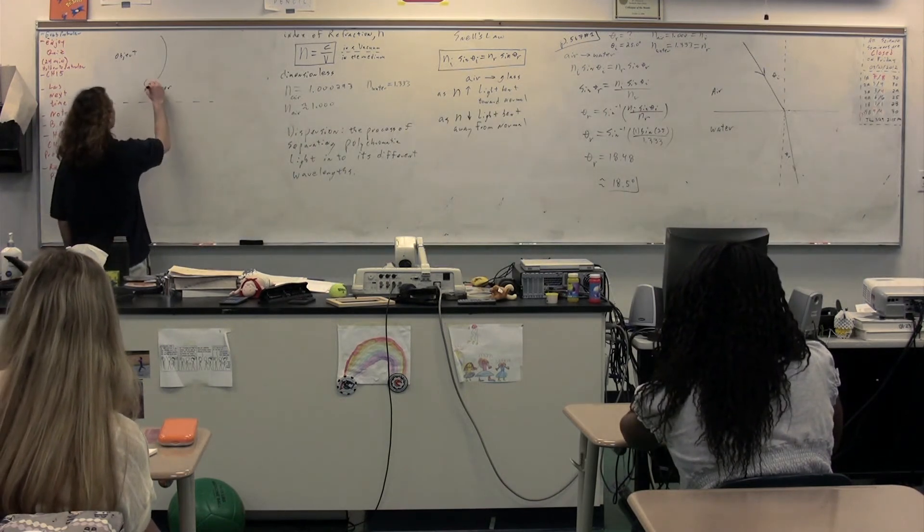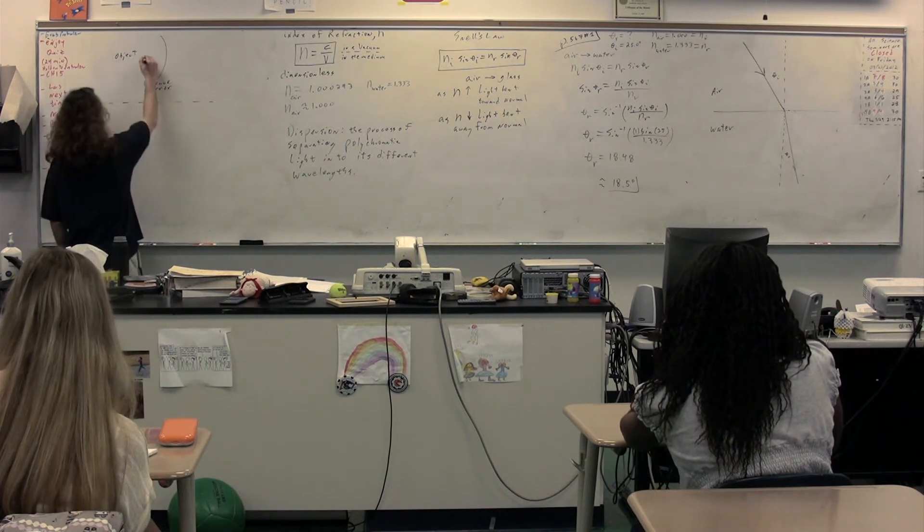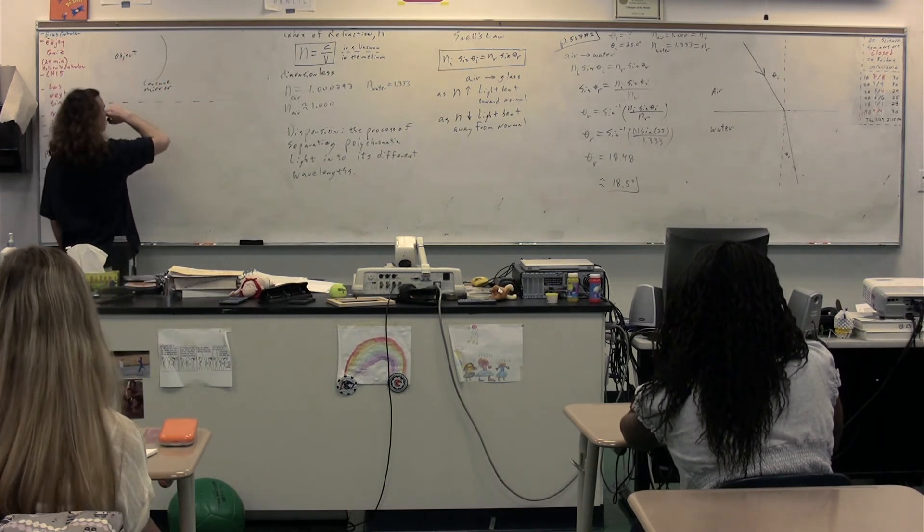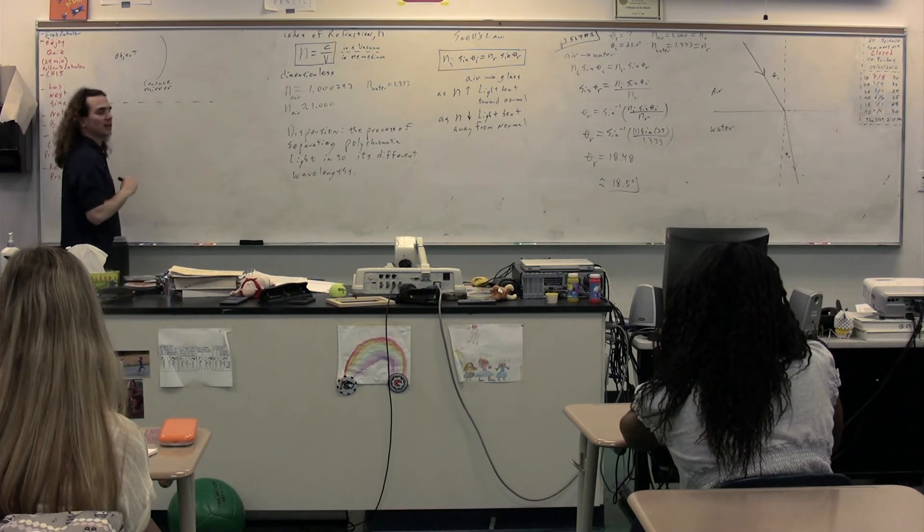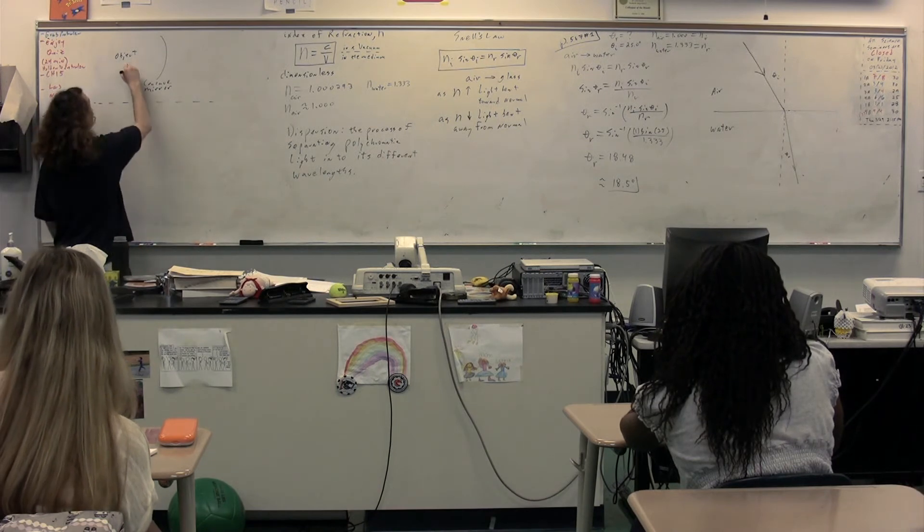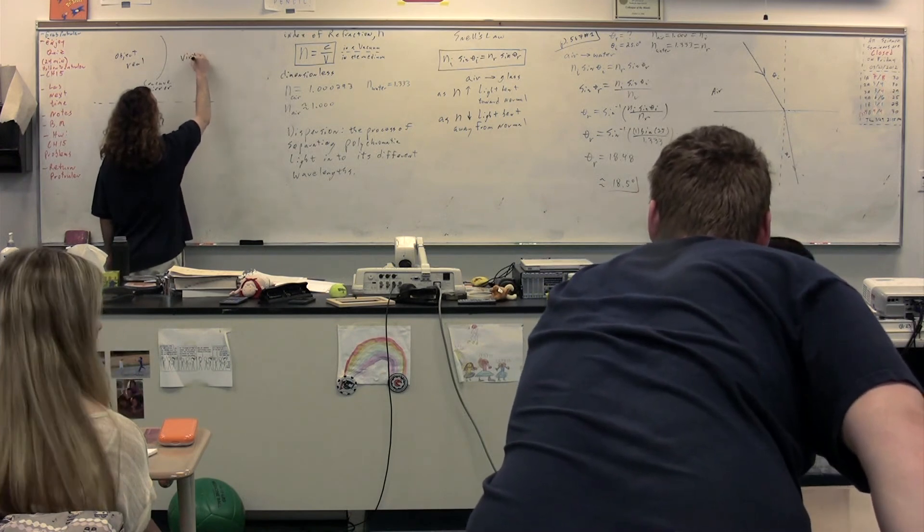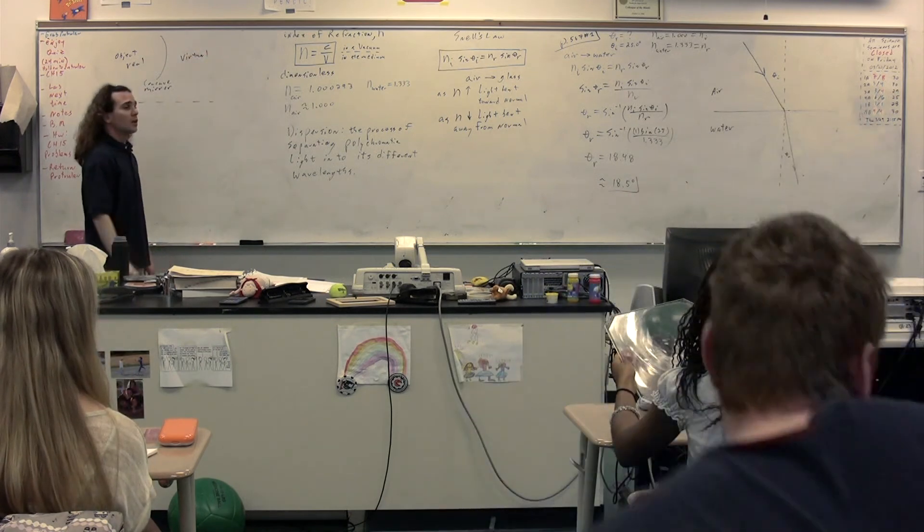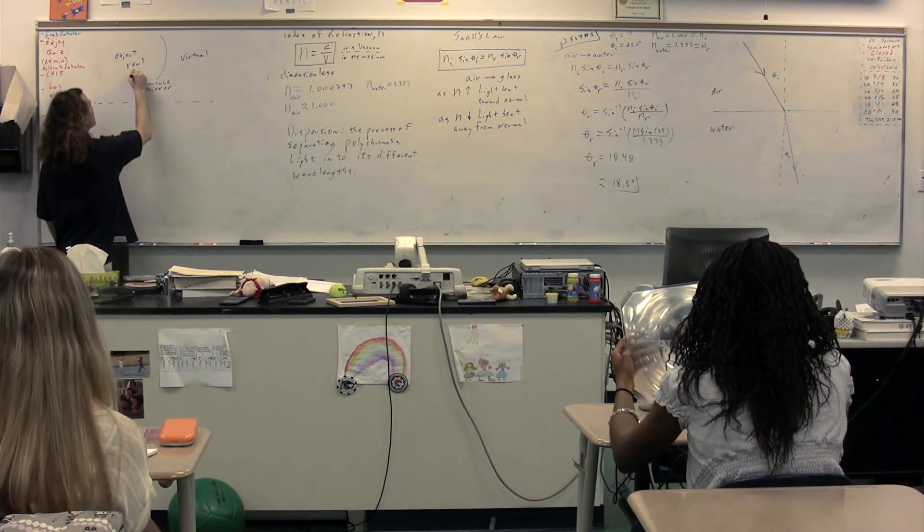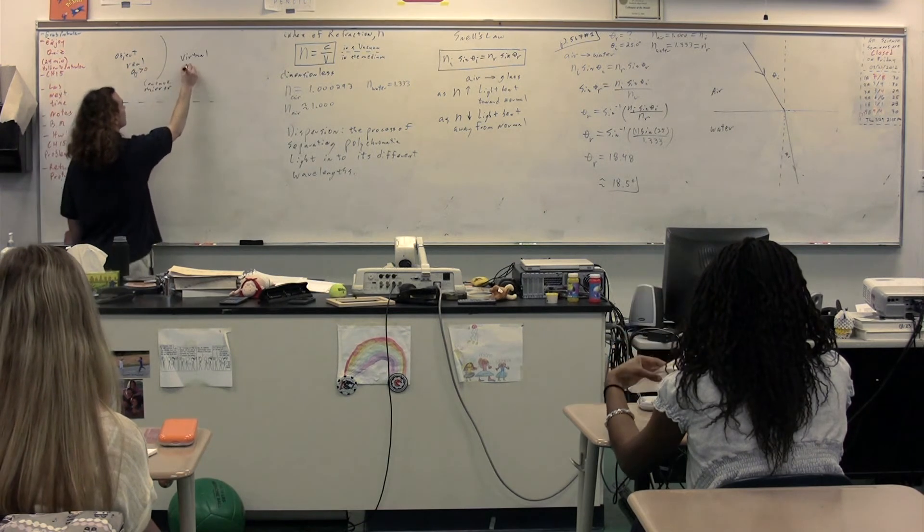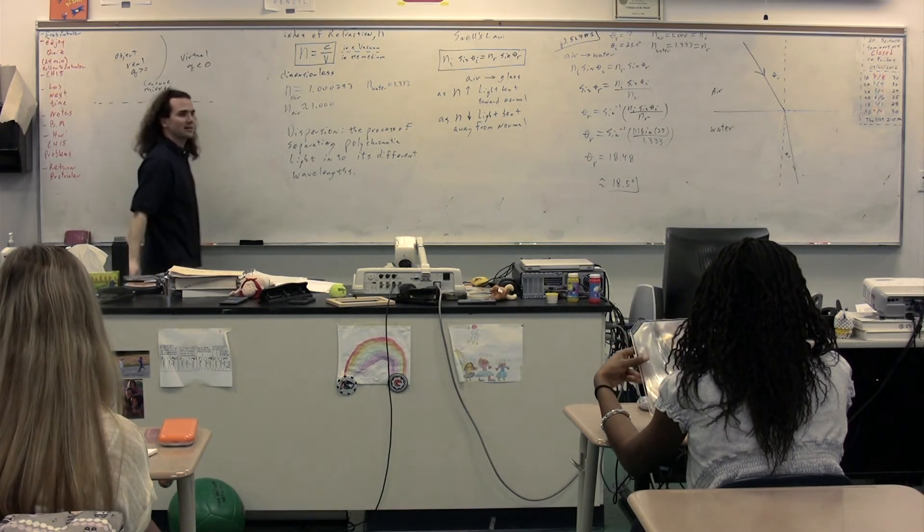If this is a concave mirror, class, this side, the same side as the object, is the real or virtual side. This is the real side. That makes this side over here the virtual side of the mirror. That means that the image distance when it's real is greater than zero and the image distance when it's virtual is less than zero.